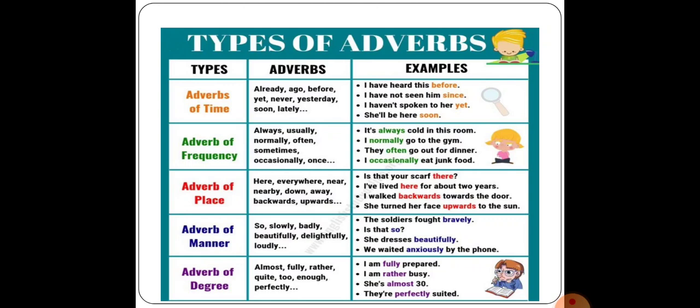Next, adverb of frequency. Some words used as adverbs of frequency are: always, usually, normally, often, sometimes, occasionally. Some examples: 'It's always cold in this room,' 'I normally go to the gym,' 'They often go out for dinner.' These tell us frequency — how often something happens.